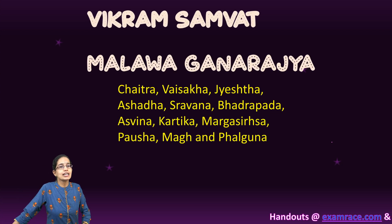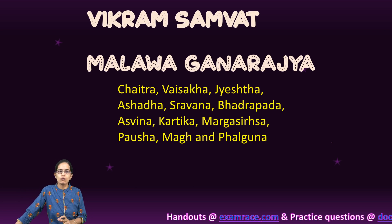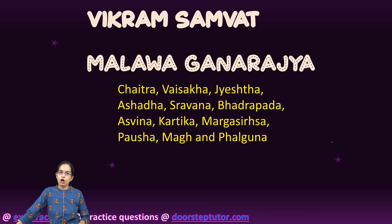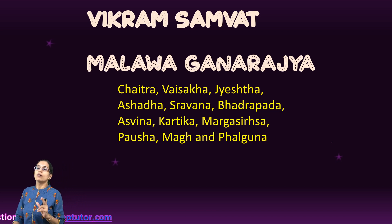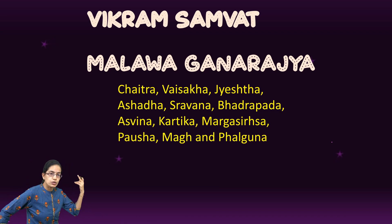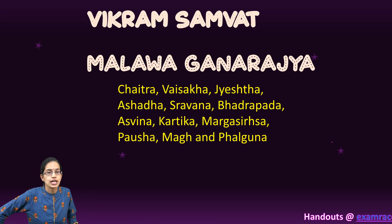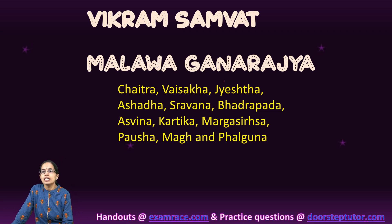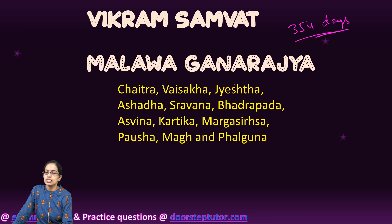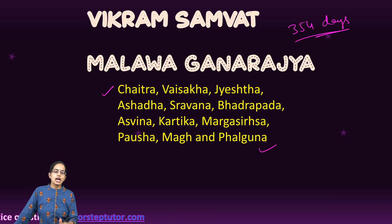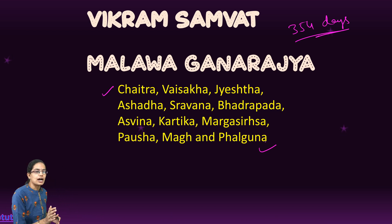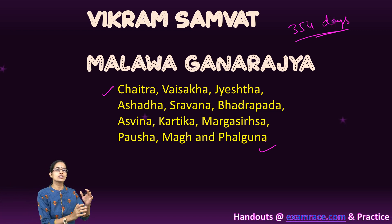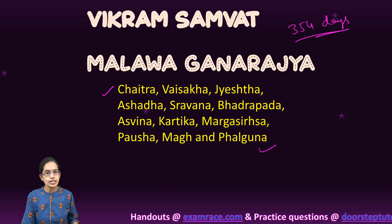In the Indian system, two major calendars existed. The first is the Vikram Samvat, laid down by King Vikramaditya of Ujjain in the Malva Ganarajya. It was about 56 years ahead of the Gregorian solar calendar of its time. Vikram Samvat had 354 days and 12 months, starting from Chaitra to Falgun. The concept of Adhik Mass was applicable here, with an extra month added every third and fifth year.